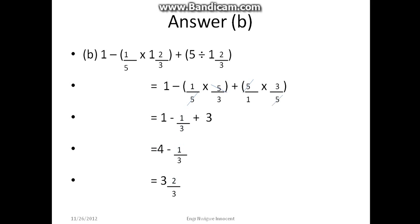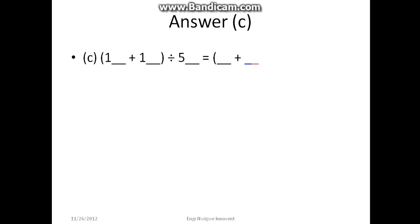Answer (c): (1 5/8 + 1 3/5) ÷ 5 3/8. This equals (13/8 + 8/5) ÷ 43/8. Converting: 8 times 1 is 8 plus 5 equals 13, so 13/8. And 5 times 1 is 5 plus 3 equals 8, so 8/5. For the divisor, 8 times 5 is 40 plus 3 gives us 43/8.